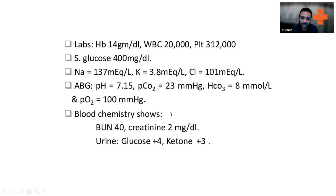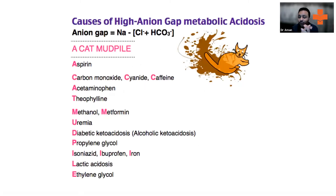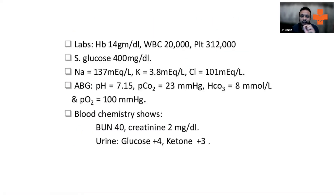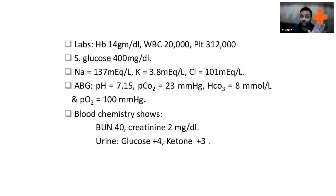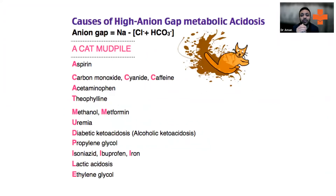And that is DKA. The reason I'm telling you this: whenever you have high lactates, high ketones, acidosis, and the patient does not have any obvious history of diabetes, check blood sugars. If blood sugar is high, do a urine dip — you can see glucose and ketones on the urine dip.